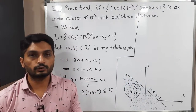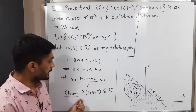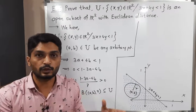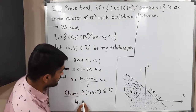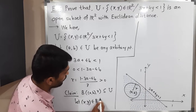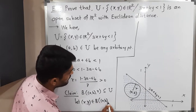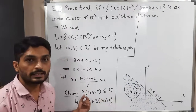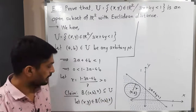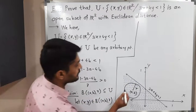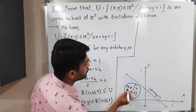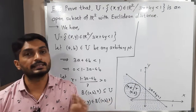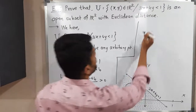To prove one set is a subset of another, we select one point from the first set and prove that it is in the second set. So let (x, y) belong to the open ball with center (a, b) and radius r. We take this point from the ball and prove it is in U. Since (x, y) belongs to this open ball, the distance of that point from the center is less than the radius.